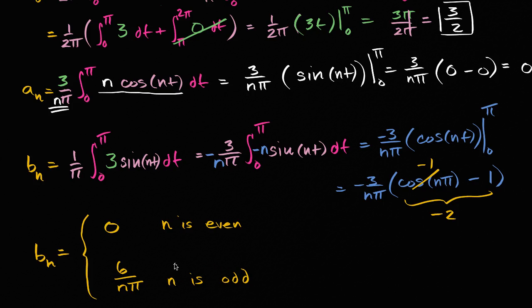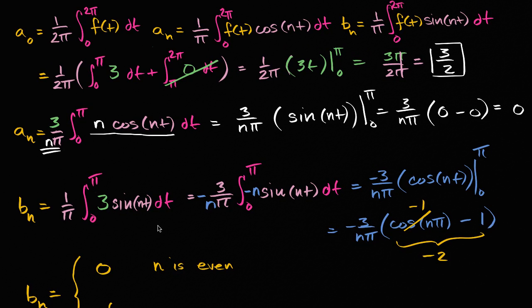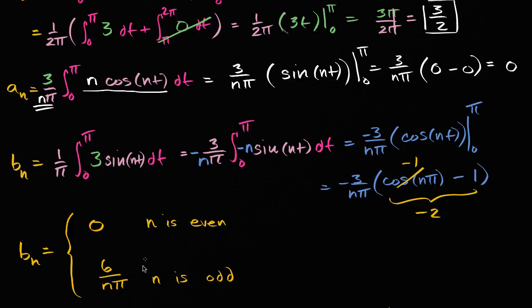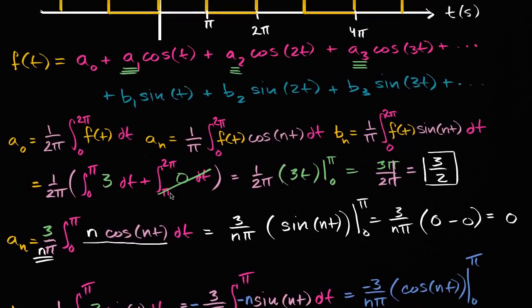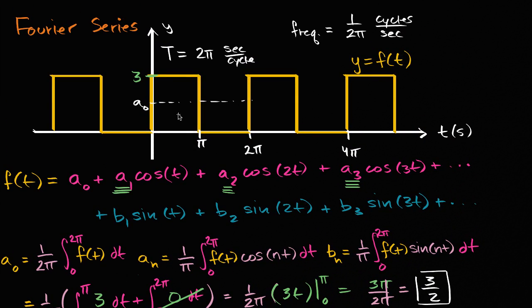So one way to think about it: you're going to get your a sub zero, you're not going to have any of the cosine terms, and you're only going to have the odd sine terms. And if you think about it, just visually, if you look at the square wave, it makes sense that you're going to have the sines and not the cosines.